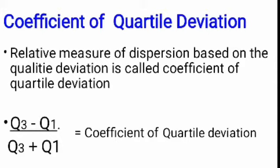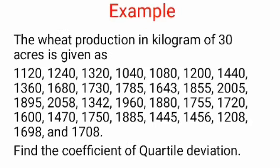The coefficient of quartile deviation is calculated as Q3 minus Q1 divided by Q3 plus Q1. Coefficient or relative measures of dispersion are used for the comparison of two or more deviations. Now we want to discuss an example for calculating quartile deviation and coefficient of quartile deviation. The given data is the wheat production in kilograms of 30 acres, which is ungrouped data because there is no frequency.